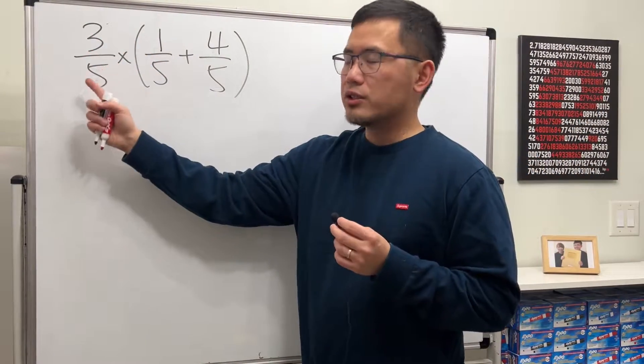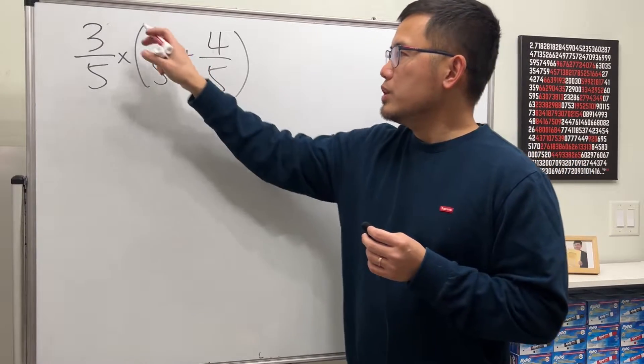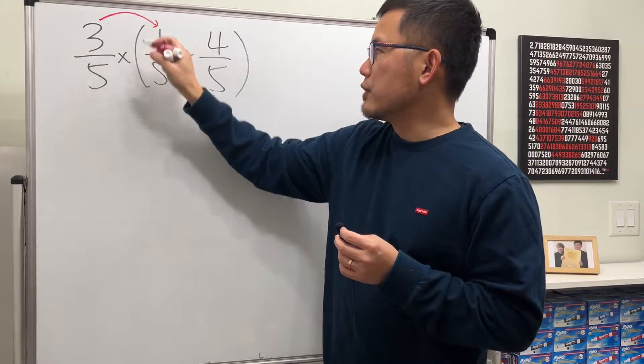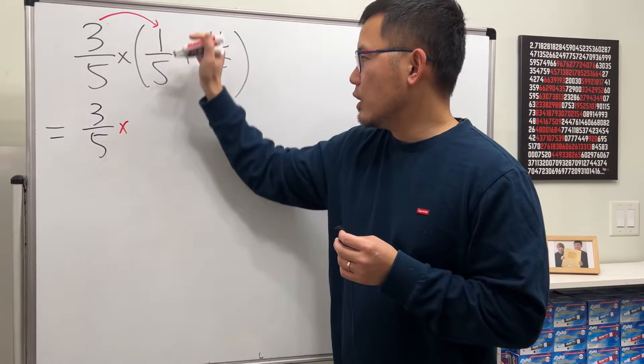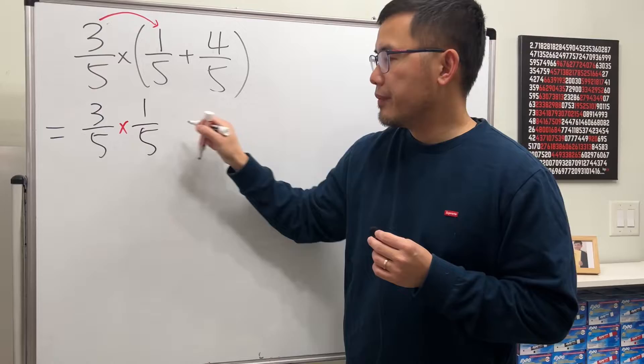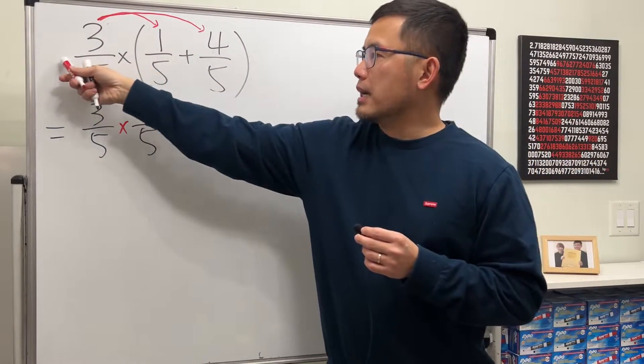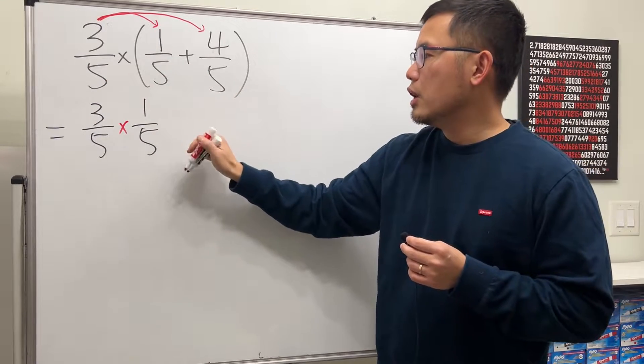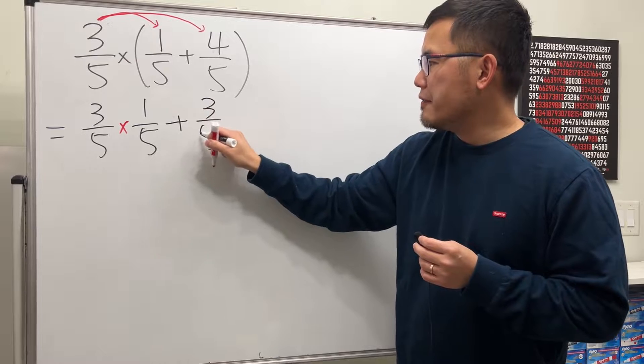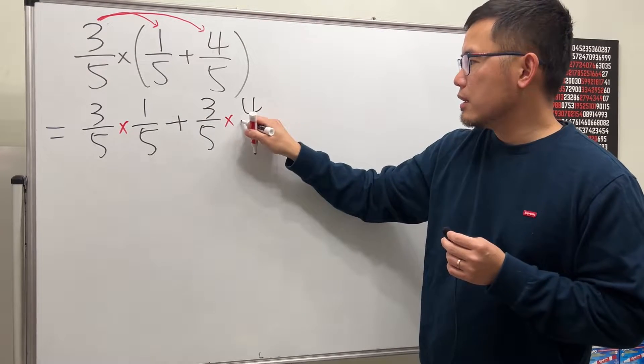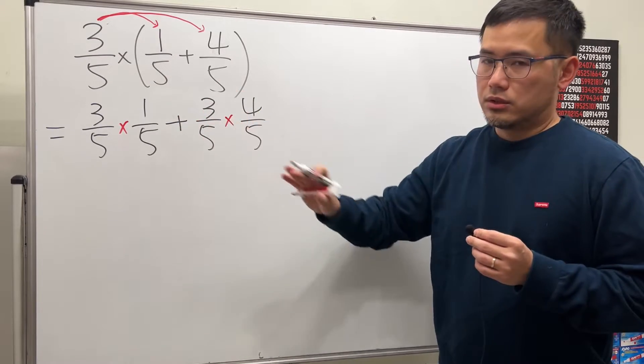We have this number, it's a fraction, 3 over 5, times these two terms inside, right? Yes, we can totally just take this and multiply with the first term. So we get 3 over 5 times 1 over 5. And after that, we take this and multiply with this. This is positive, likewise that. So here we will add, and then we have 3 over 5 times 4 over 5. And then we will continue later. But this is totally okay.